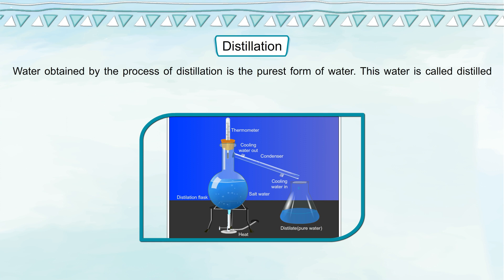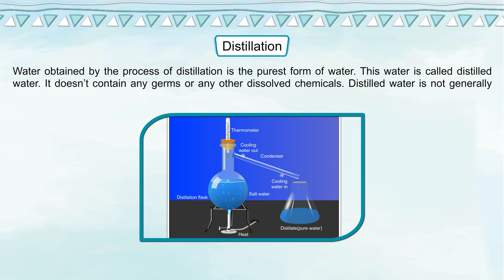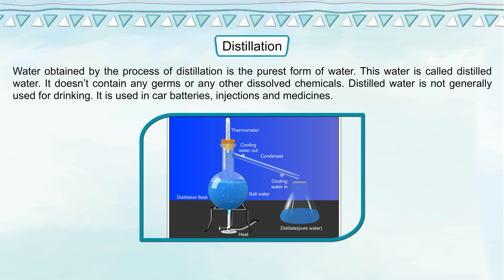Water obtained by the process of distillation is the purest form of water, called distilled water. It does not contain any germs or any other dissolved chemicals. Distilled water is not generally used for drinking; it is used in car batteries, injections and medicines.